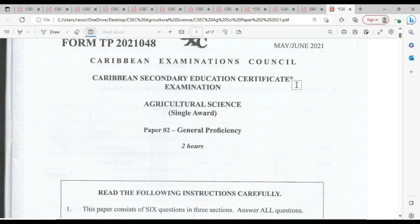Welcome to CXC Biology, TCP. I am Mr. Wilson from the TCP Academy. Today, we're going to be looking at the May-June 2021 exam paper for Agriculture Single Award. We're going to be looking at question number four in this publication. Now, if you have not yet liked, shared, or subscribed, it's time for you to do so now.